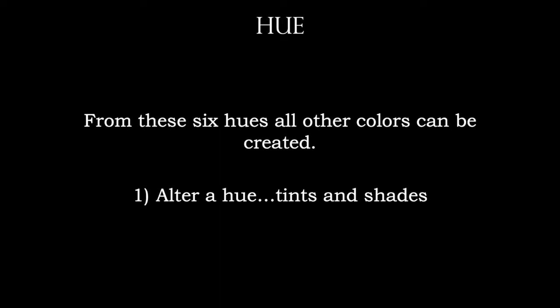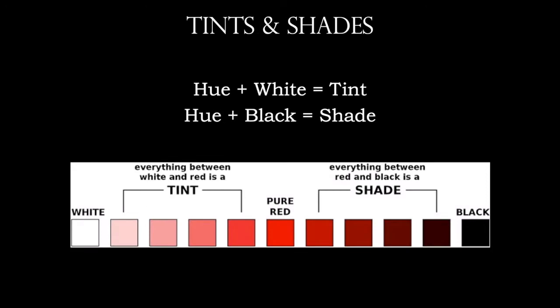From these six hues all other colors are created. The first thing we can do is alter a hue by means of tints and shades. If we have the hue red, we can create a tint by adding white in various amounts, giving us colors like pink, salmon, and coral. Adding black to red at varying amounts gives us colors such as maroon, crimson, and scarlet. This is monochromatic — using a hue with black and white — and we can still create something very representational.